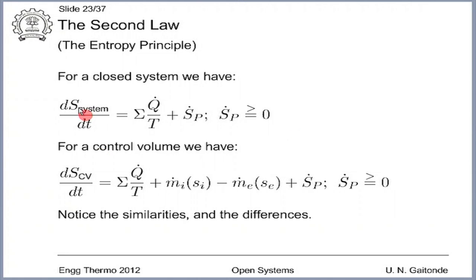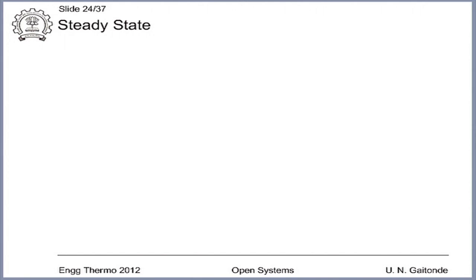If you do not believe analogy is proper, convince yourself by going back to the control volume and deriving this expression from first principles. So far we have considered our open system to behave in a general way — we let the state of the system change with time. On the left hand side for the mass conservation equation we have dm_cv by dt, we have dE_cv by dt for the energy equation, and dS_cv by dt for the entropy equation.